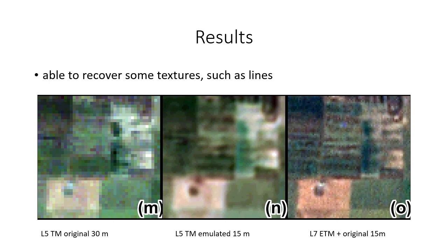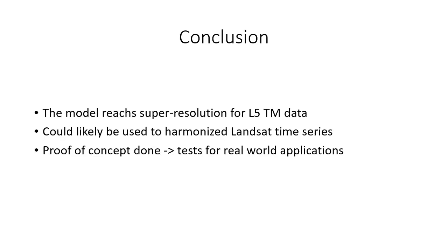Finally, the model is also able to recover some textures, for example lines in an agriculture field. To conclude, the model reaches super resolution for the L5 data, which can be effectively emulated at 15 meter. The model could be used to harmonize the reflectance values between L5 and L7. This study is only a proof of concept and more tests with more images will be made for real world applications. Thank you very much.